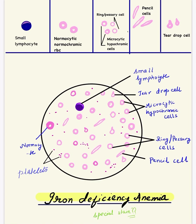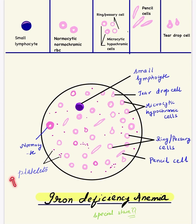We can also draw platelets in the background as magenta-colored dots. The size of platelets is about 2 to 3 microns. In some cases of iron deficiency anemia we see increased platelets, i.e., thrombocytosis, so we can draw platelet clumps as well. Drawing platelets is optional.